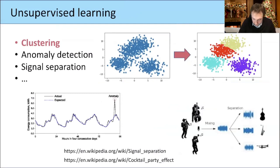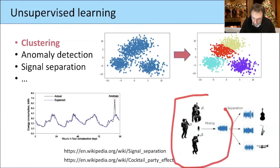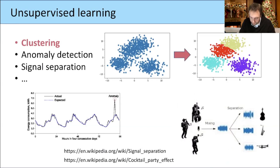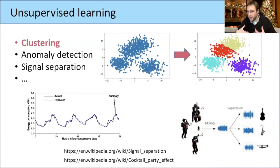For example, in signal separation: if you have an audio recording of three instruments, the sound wave is the sum of three different sound waves. There are programs that can figure out that in this sound wave there are three sources and find a way of separating them. Also anomaly detection: if you have a graph of energy consumption over time and you see a peak that is unusual, an unsupervised learning algorithm can detect that this is not normal.